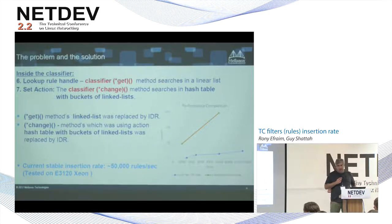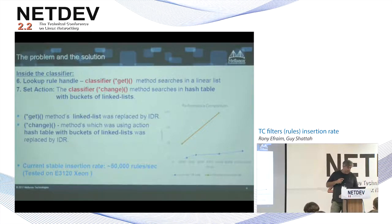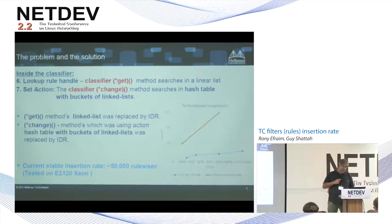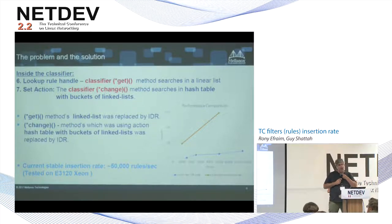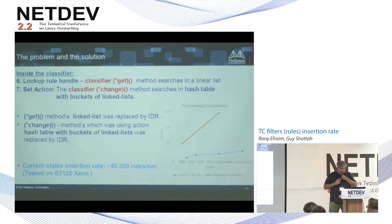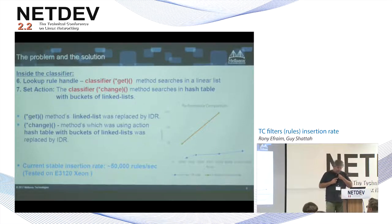We first wanted to use a big hash, but that would require a lot of memory allocated in advance. Then we decided to use IDR — we did a request for IDR64 which wasn't in the kernel but now it is — so those patches are in the kernel. Now we can reach about 50k rules per second, and on some processors even 100k rules update per second. Instead of waiting a few hours to fulfill one million rules, you can now do it in less than 10 seconds. But we still want to make it faster.